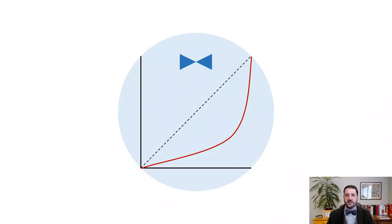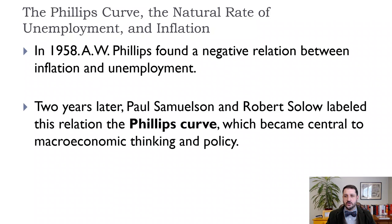So if we just review the history, A.W. Phillips found this negative relationship between inflation and unemployment. He was a New Zealand economist who was looking at data from the UK and countries around the world. And then Paul Samuelson and Robert Solow called this the Phillips Curve. And it really became important in the way that the Federal Reserve started thinking about the trade off between unemployment and inflation.